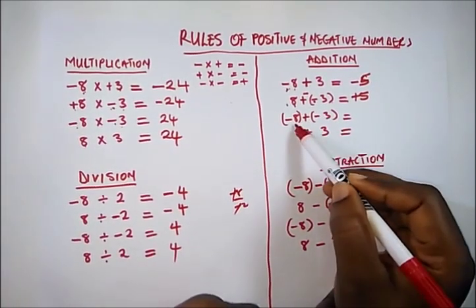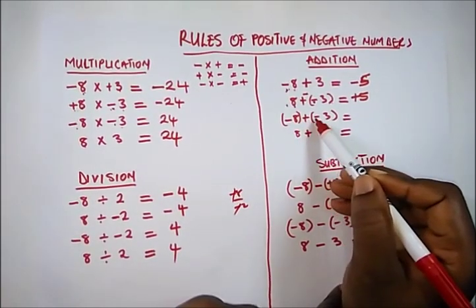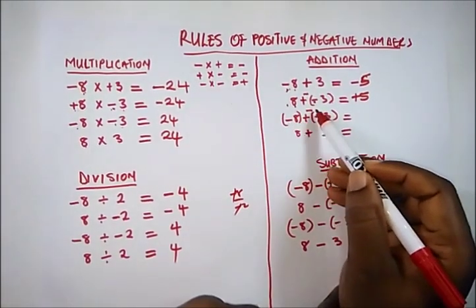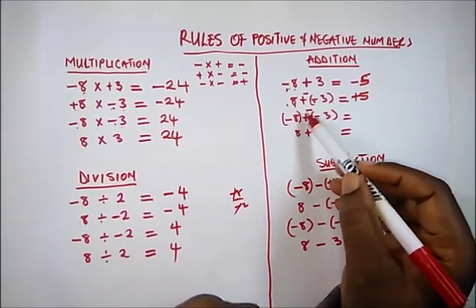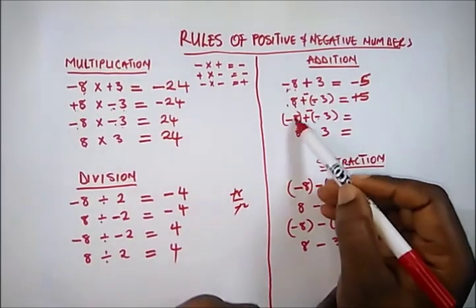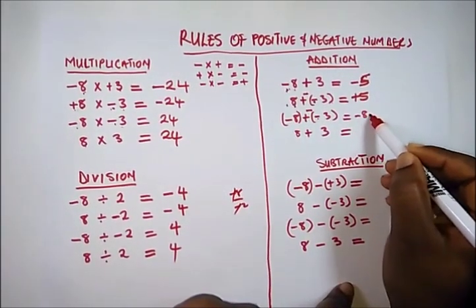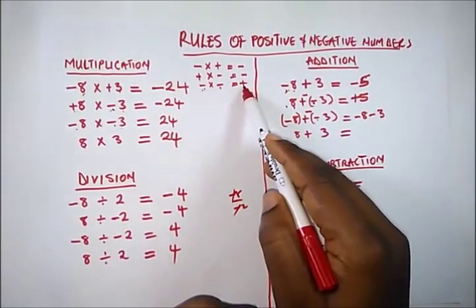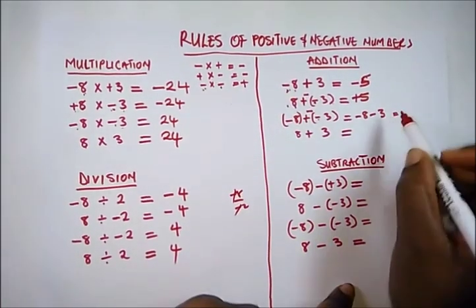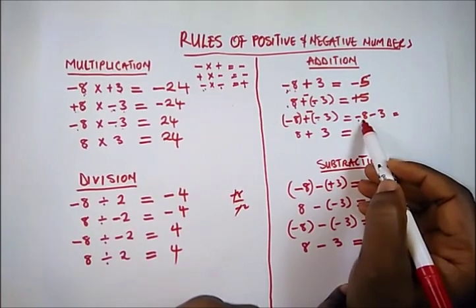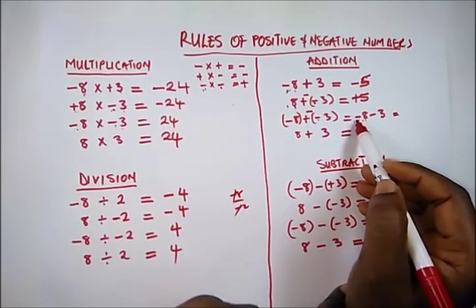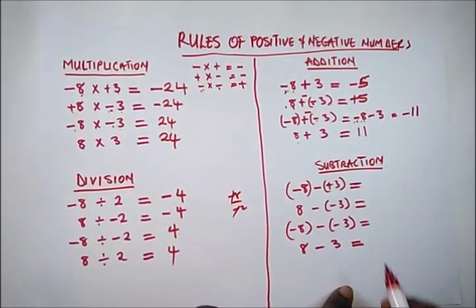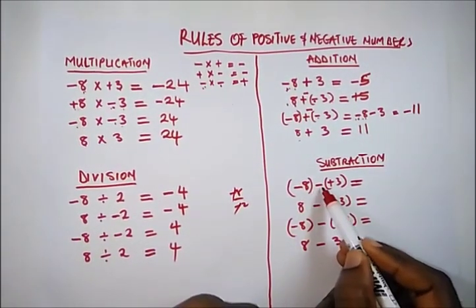Here when we open the bracket, a plus multiplying a minus gives a minus, so we have minus 8 minus 3. When you have minus 8 minus 3, you perform an addition and keep the sign negative, since the biggest number carries a negative sign. That gives minus 11. And minus times minus is plus, so we perform addition and keep the negative sign — giving minus 11 again. While 8 plus 3 is simply 11.